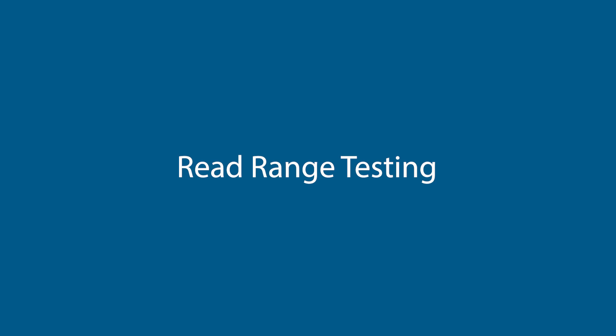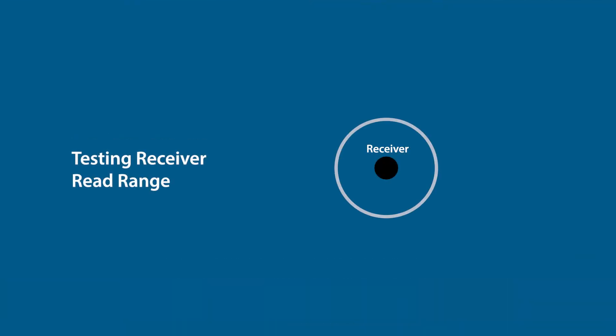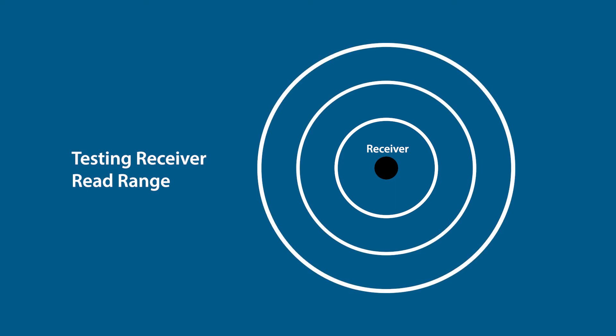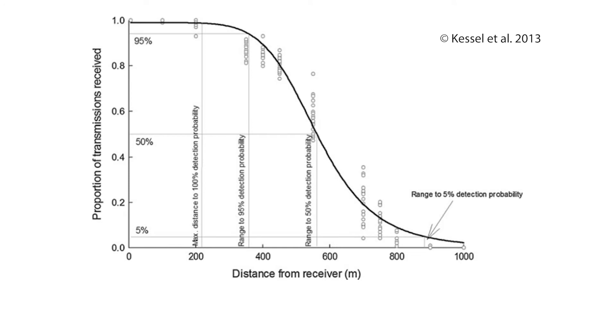Once you've chosen a location to place the receiver in a river, it's important to test what we call the read range of the receiver — that is, how far away the receiver can detect a fish. You turn the receiver on and use a specially coded test tag that sends out a continuous signal, placing it at known distances from the receiver. For example, you would go 100 meters away to see if it's detecting, then 200 meters, and continue until the signal becomes weak. By plotting that data over a curve, you can understand the detection probabilities at a given distance from the receiver, which is important for confirming whether a fish passed a particular location.